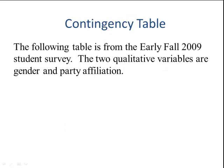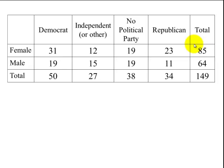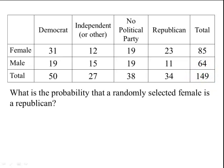For our next example, we're going to use the data from the early fall 2009 student survey, looking at the relationship between gender and party affiliation. There was a total of 149 people who completed the survey. What is the probability that a randomly selected female is a Republican? We're only looking at the females, which total 85. There were 23 Republicans out of 85, so the answer is about 27%.